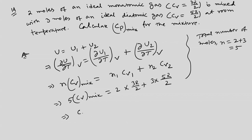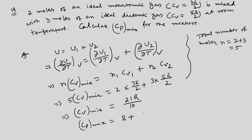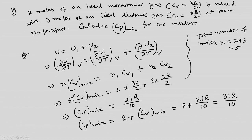Solving gives C_v_mix equals 21R/10. Then C_p_mix equals C_v_mix plus R equals R plus 21R/10, which is 31R/10. This is a straightforward problem.